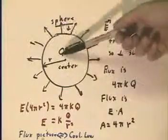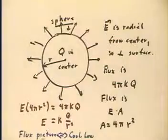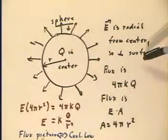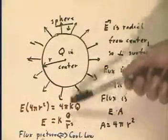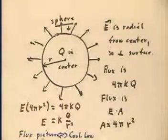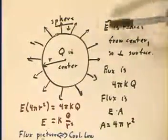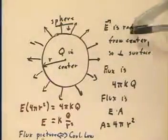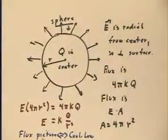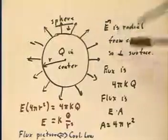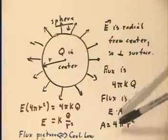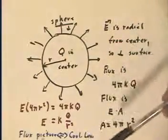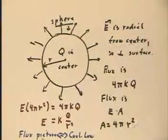So if we have a sphere with a charge in the center, the electric field is radial from the center, so it's perpendicular to the surface. It's also uniform, kQ over r² at every point of the surface. Again, we could make an equivalent symmetry argument to show that it's radial and constant on the surface. But the flux for the sphere is 4πkQ, E times A. The 4πr² times the kQ over r² gives us the 4πkQ.